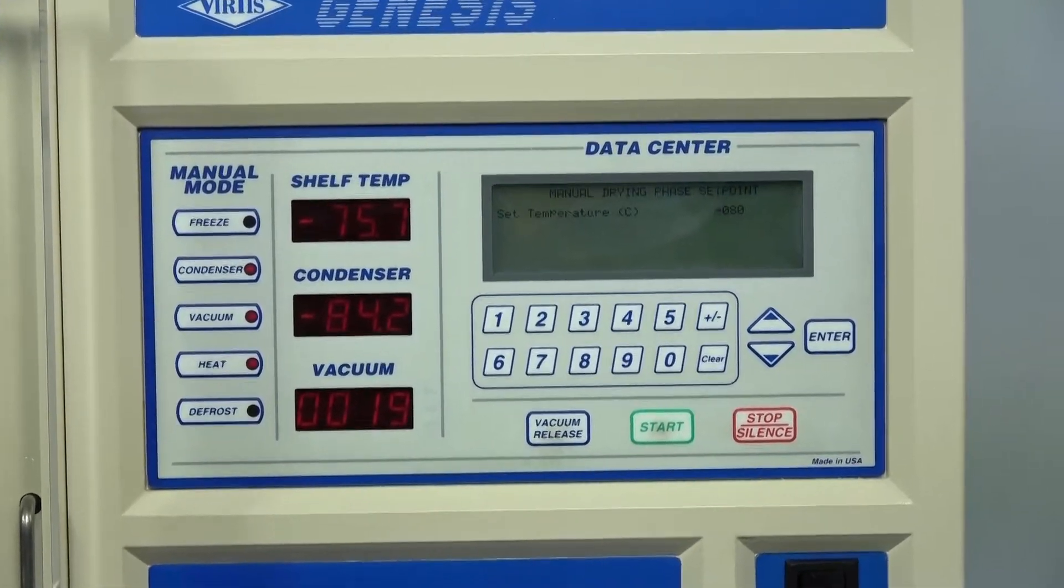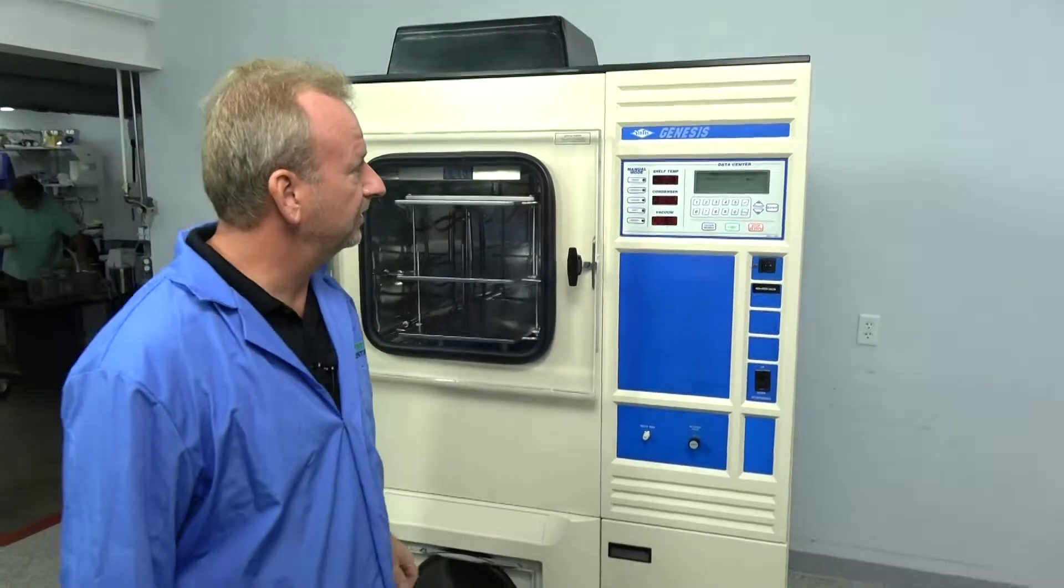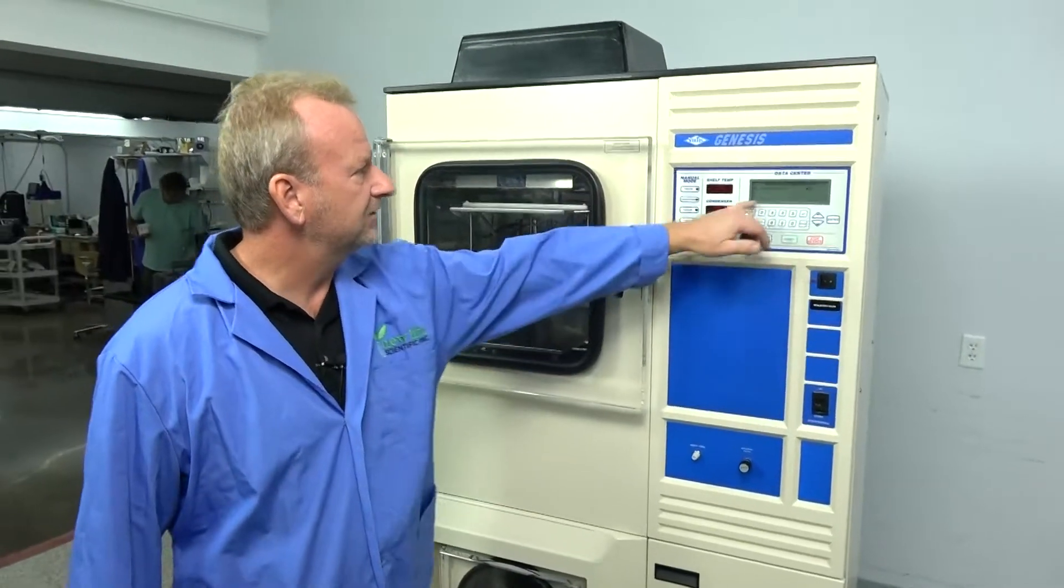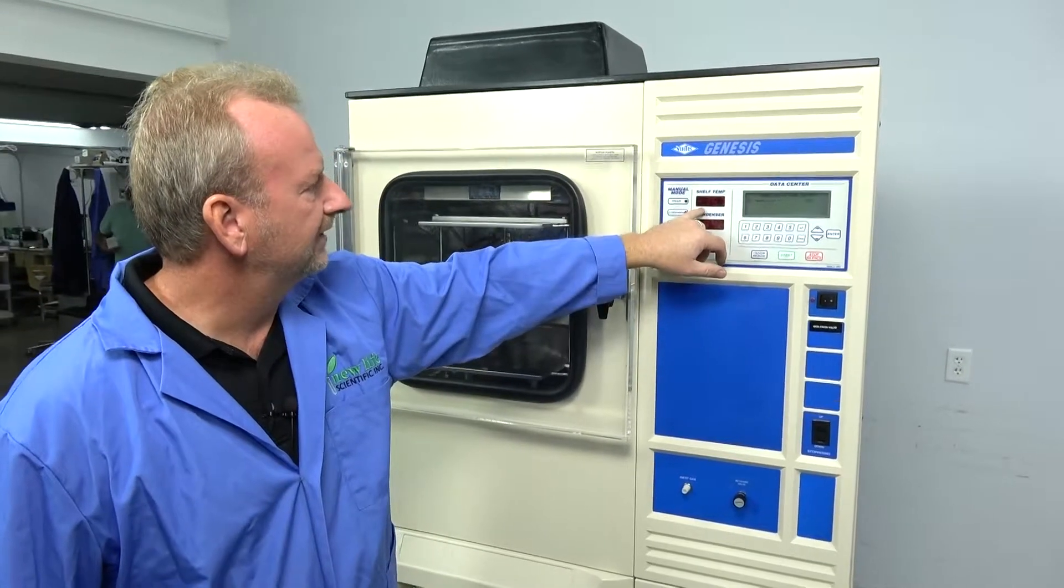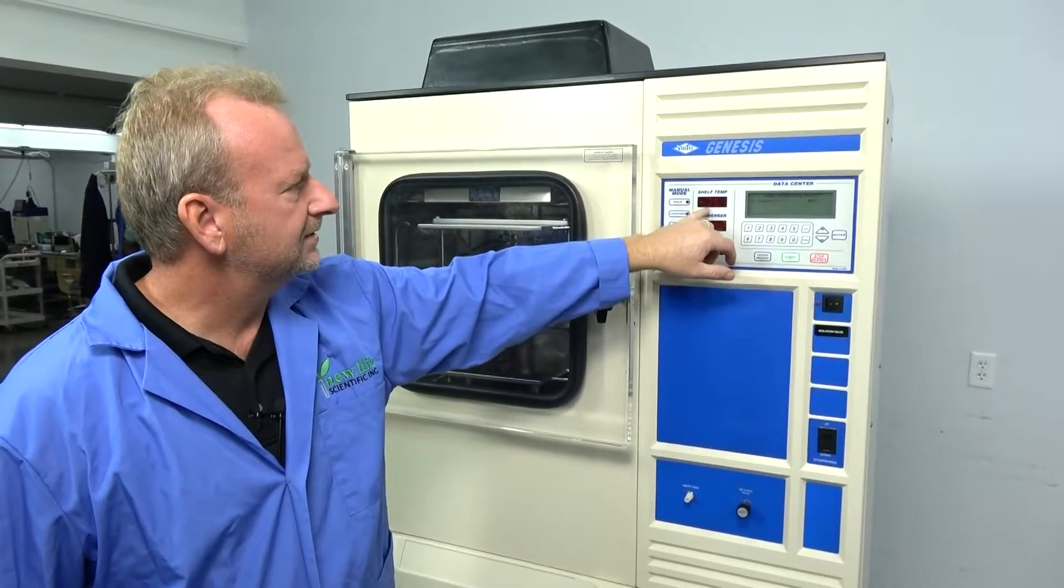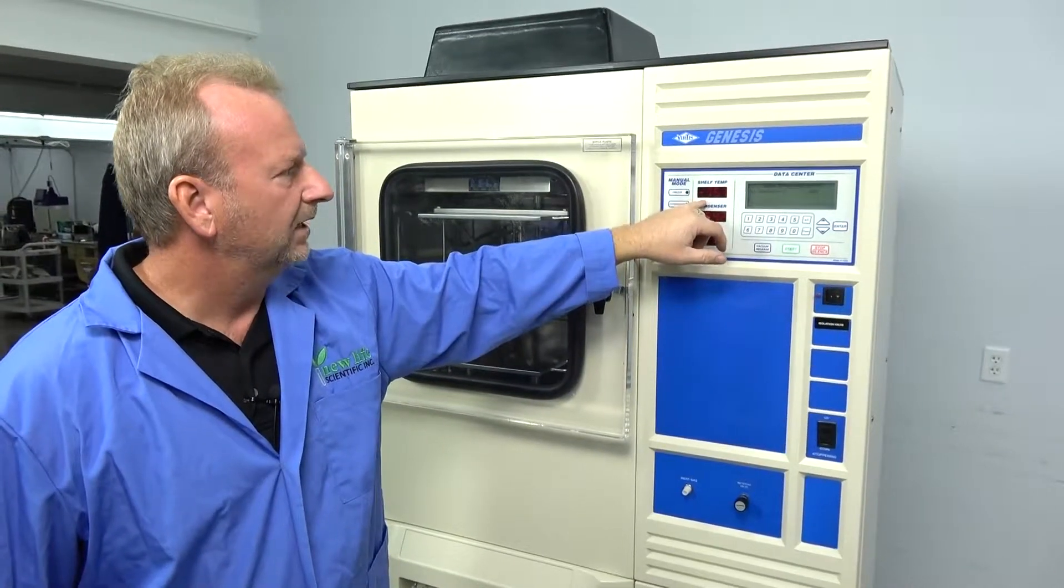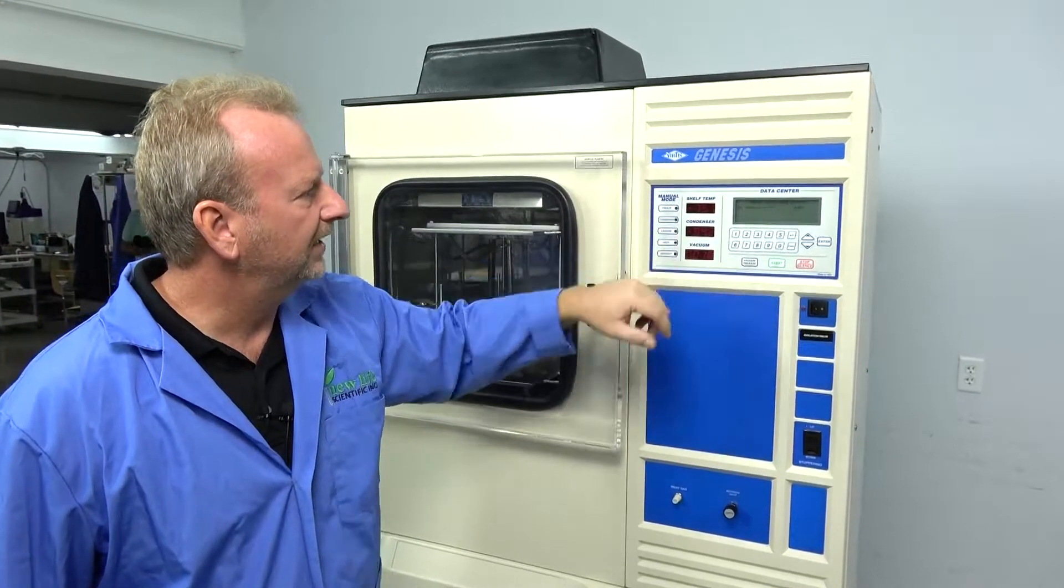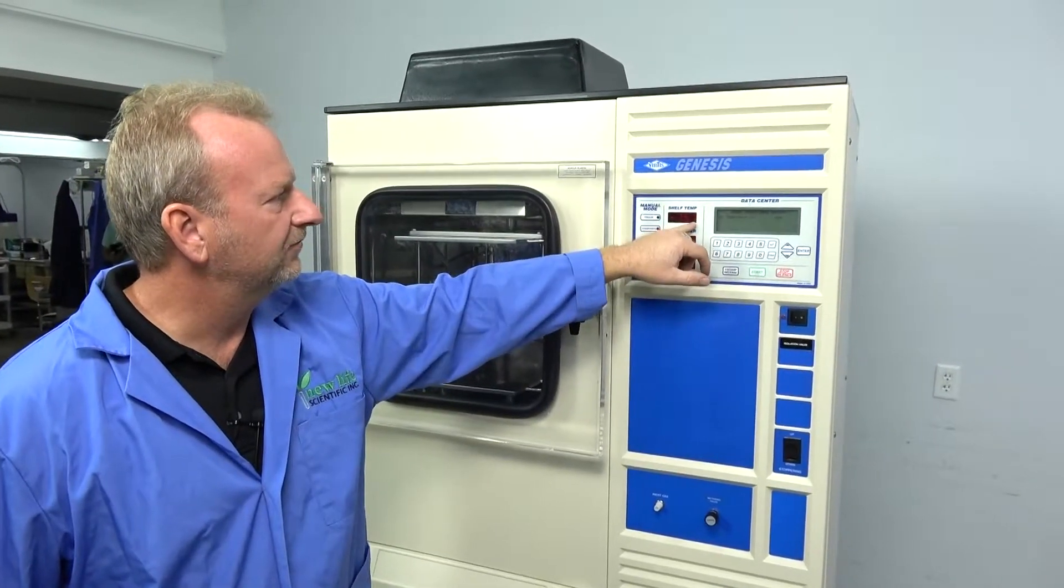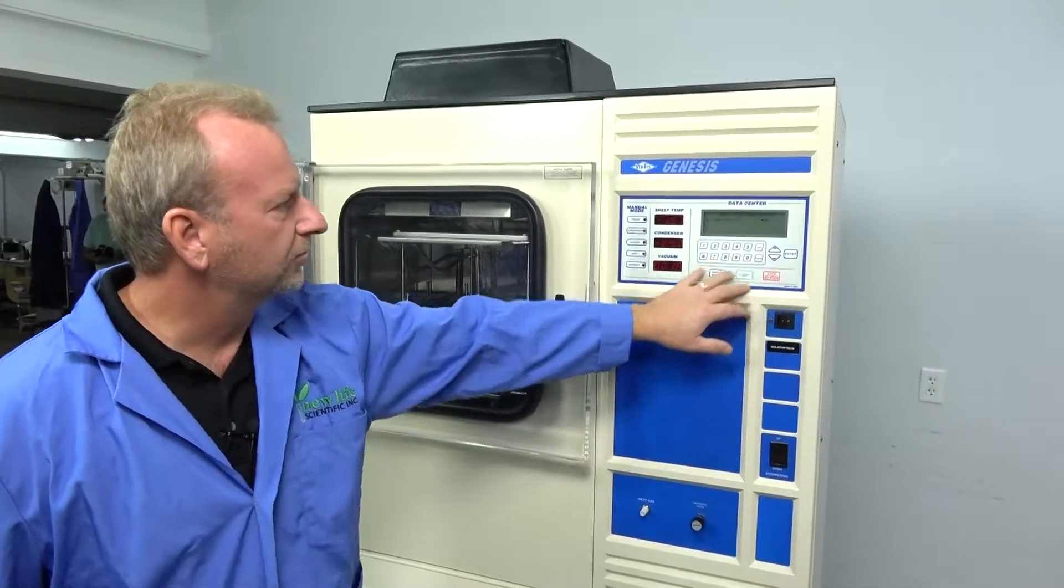So this machine is running, as far as I could tell, everything is running at factory specs from a new machine. I just went ahead and set the temperatures at negative 80 here on the shelf temp. And it's working its way towards that. This is about as low as it gets. But that's already below the spec. I think they call it negative 75, and we're already below that there.